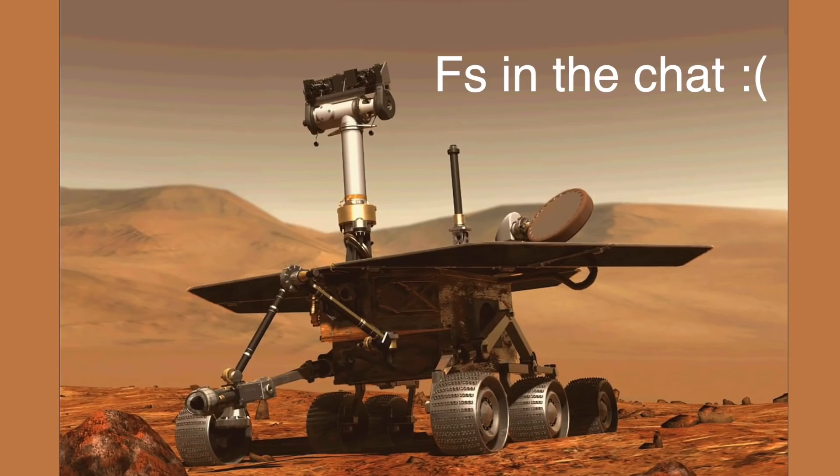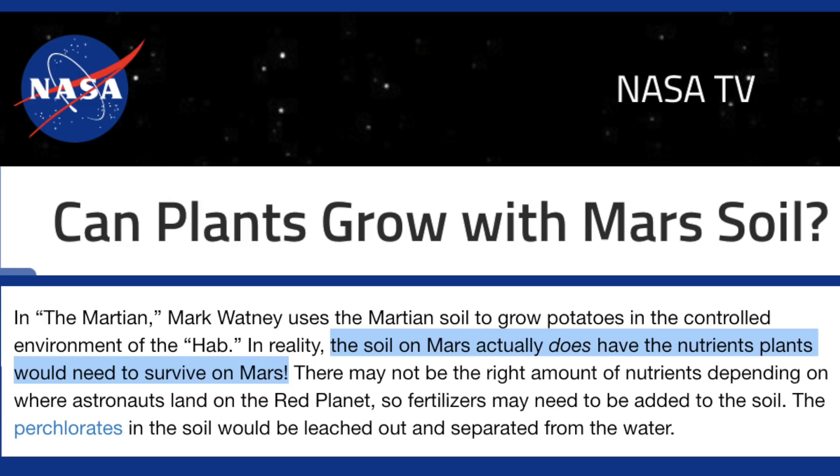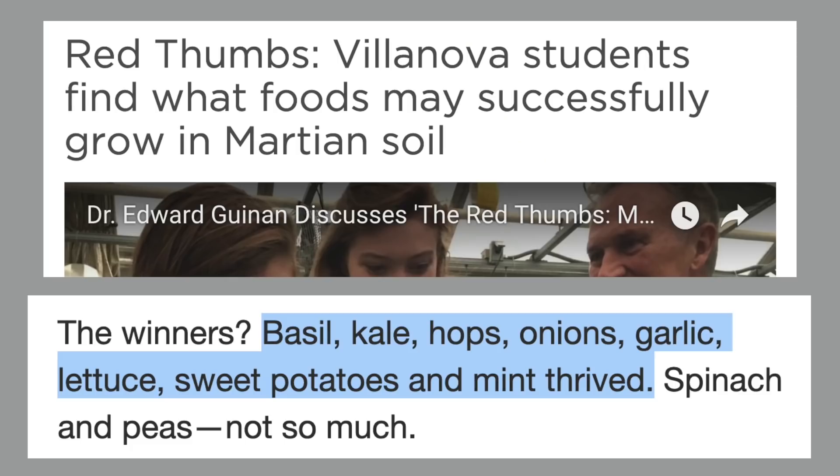Martian soil is primarily regolith — basically a layer of dust and broken pieces of rock — which is why dust storms are so common on Mars, like the one that killed the Opportunity rover. Martian soil is full of perchlorate chemicals, which are toxic to both plants and humans. However, NASA reports that in some regions the soil does have the necessary nutrients to grow plants, and a recent study at Villanova found that some plants actually grow quite well in it, including kale, lettuce, and sweet potatoes. Those perchlorate chemicals actually dissolve in water, so once we have water on Mars we should be able to rinse them out.